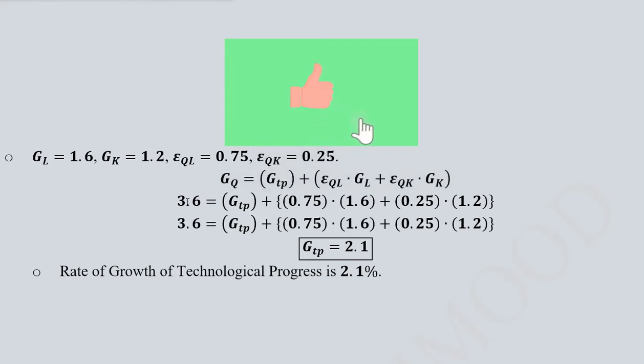This 3.6 percent was given in the lines explained above—3.6 percent was the growth rate of output. This is the growth rate of the technological progress that we want to find, so we are keeping it as it is. We have these values that we have substituted.